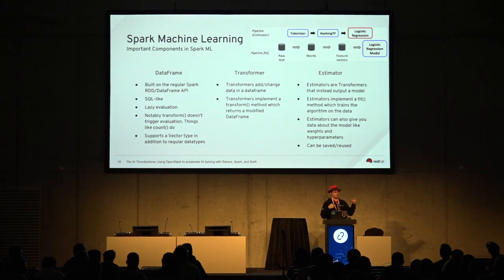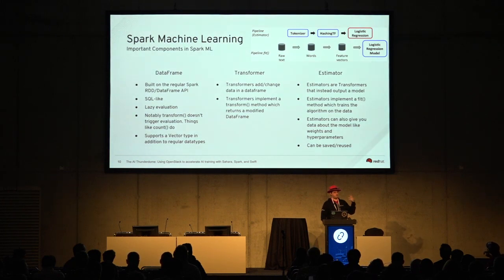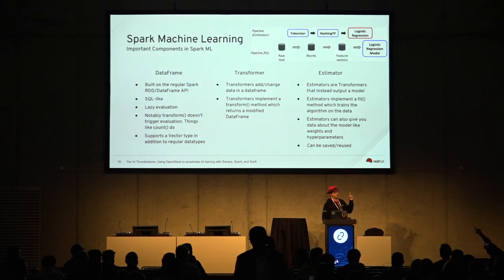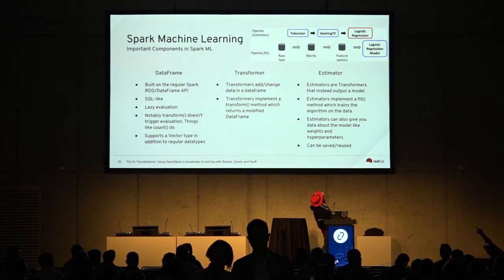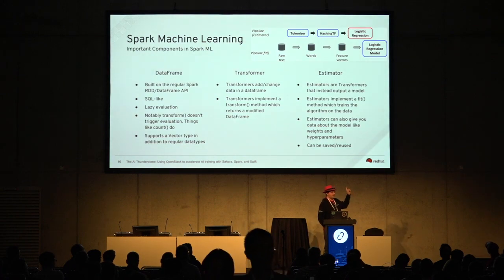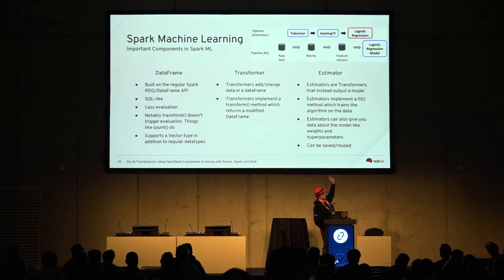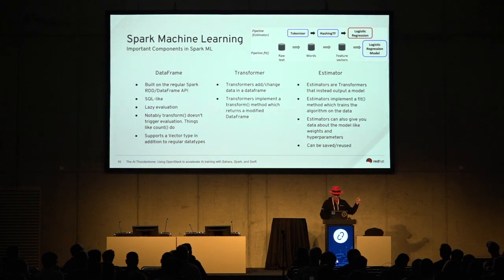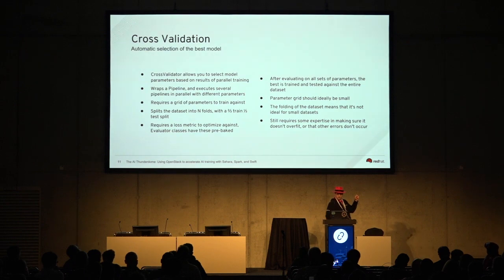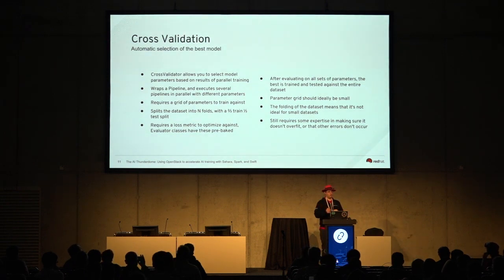Now on to the really powerful tool that Spark gives you for this, which is cross validation. As mentioned, there are a lot of knobs you can turn — batch size, learning rate, normalization, number of iterations, etc. Cross validation lets you tune all of these programmatically. It allows you to form a grid and test against each of those different combinations, though as you expand the grid and have more combinations to test, that starts to get prohibitive in terms of performance.